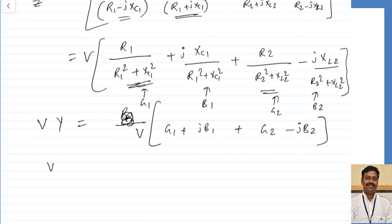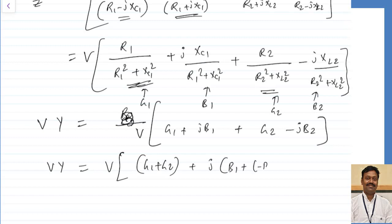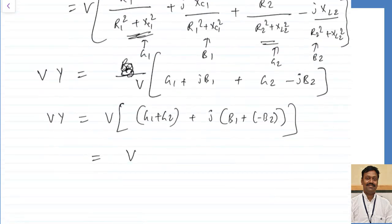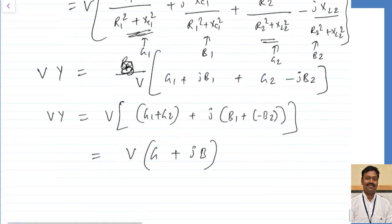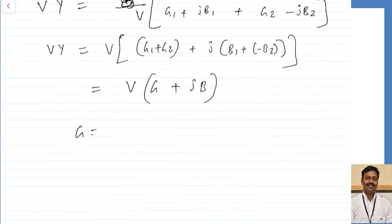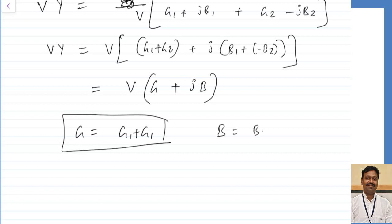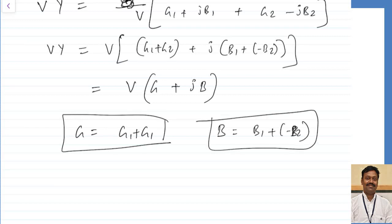Multiplying by V, I can write V into Y equals V into G1 plus G2 plus J times B1 minus B2. Total admittance Y equals G plus J B. Total conductance is the sum of individual conductances, and total susceptance is the sum of individual susceptances. Y equals Y1 plus Y2, where Y1 is G1 plus J B1 and Y2 is G2 minus J B2.